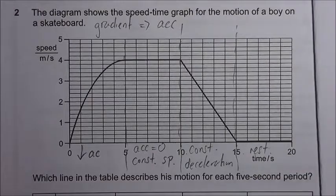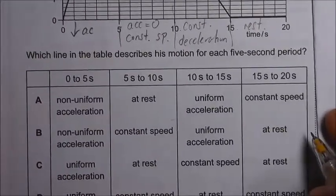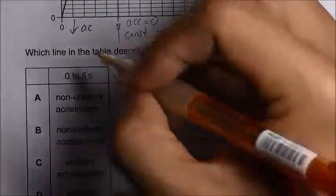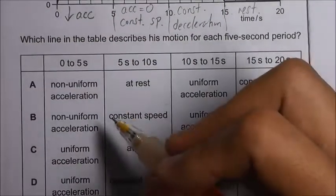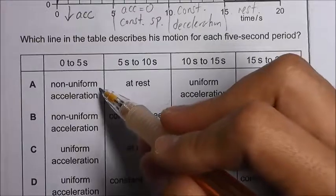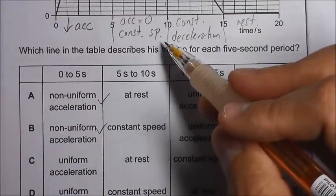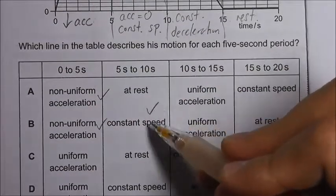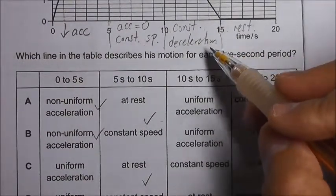Now let's look at the options that are available. The first part should be decreasing acceleration, so it should be non-uniform acceleration. And the second part, constant speed.